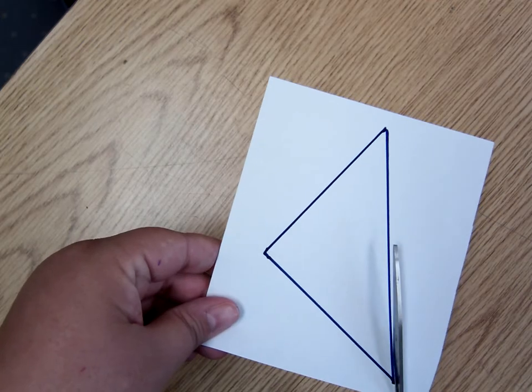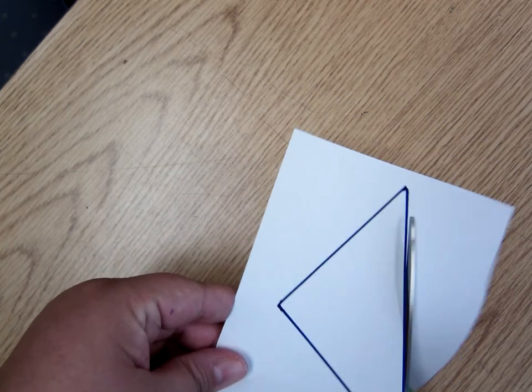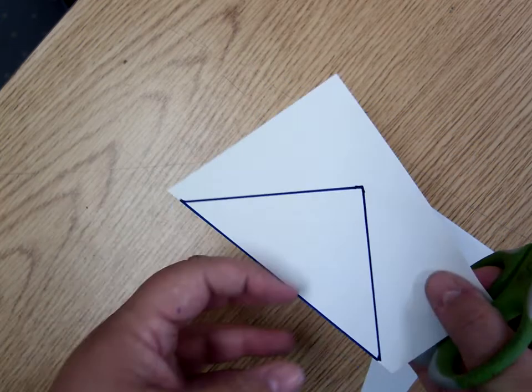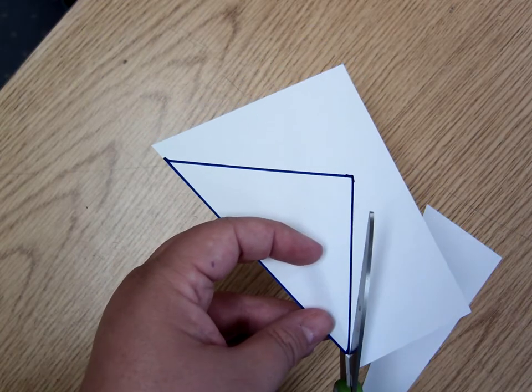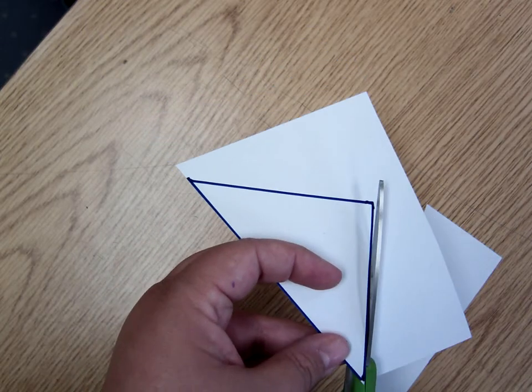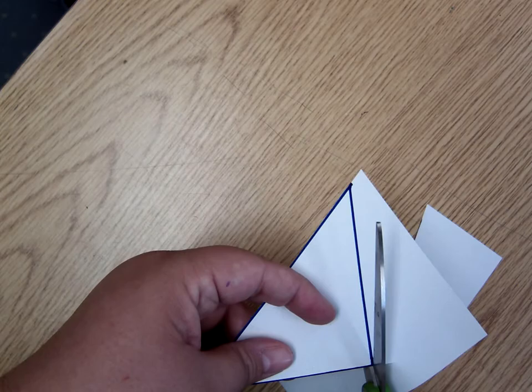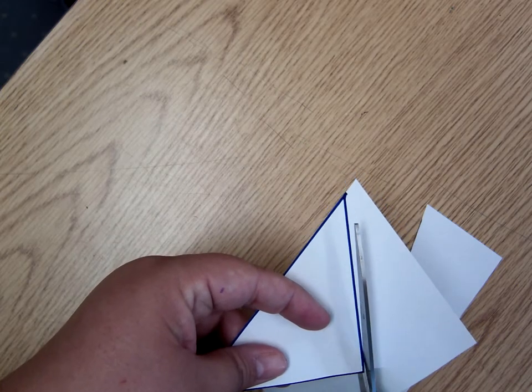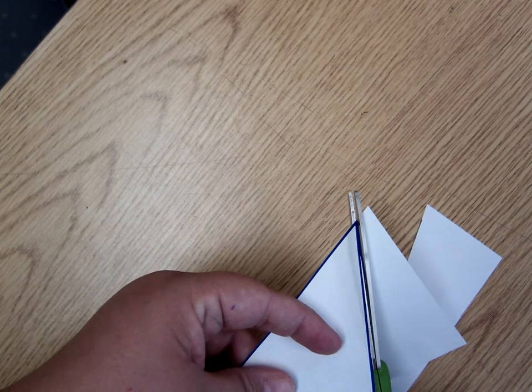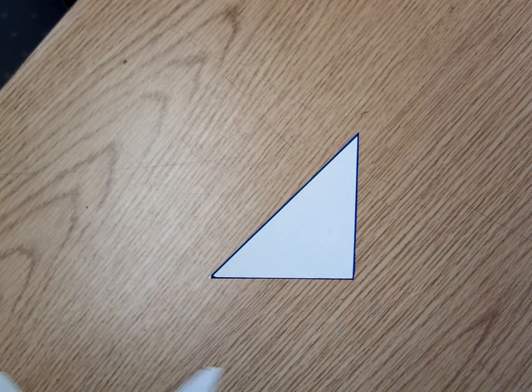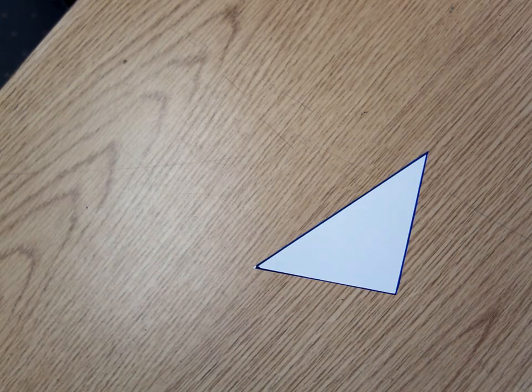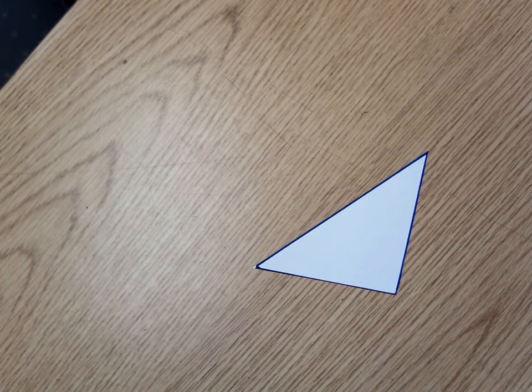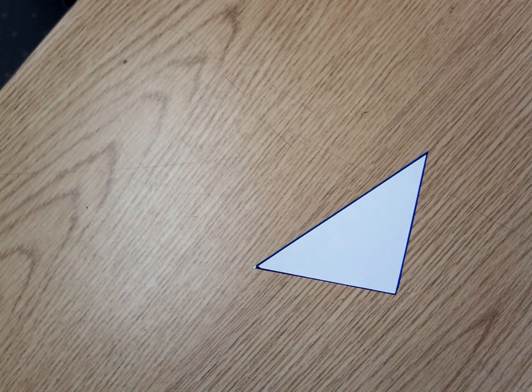First, I'm going to cut out my triangle. And you can do this with any size triangle. Okay, so here's my triangle. It has three angles. And again, I'm trying to prove to you that those three angles add up to 180.